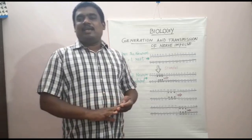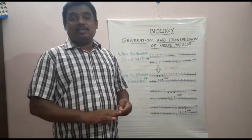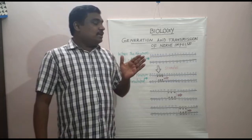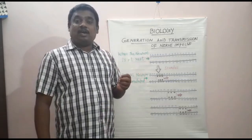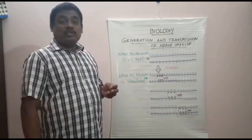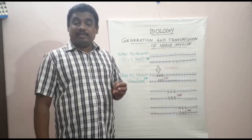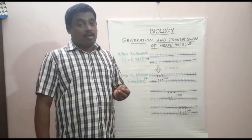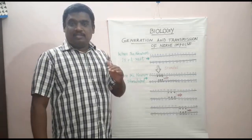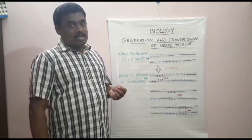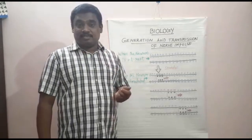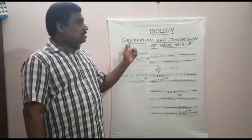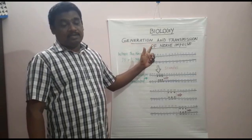Good morning students. In the previous class we learned about the neuron as the basic structural unit of the nervous system, including its structure and functions. Today we are going to learn another important concept on the nervous system: how impulses are generated and transmitted through the nerves.